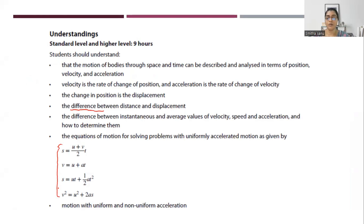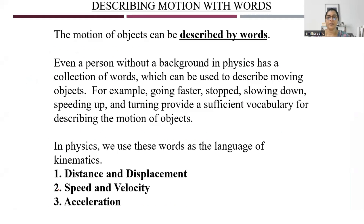Let's go in detail now. Kinematics basically describes the motion of an object. A layman who doesn't know certain terms in physics can use terms like 'object is moving faster,' 'object has slowed down,' 'object is increasing its speed,' 'decreasing its speed,' and so on.